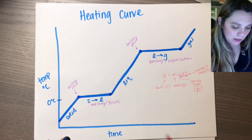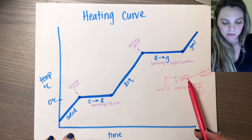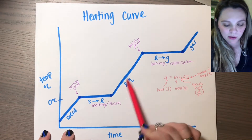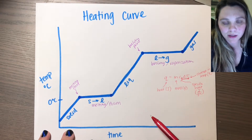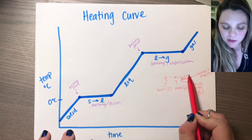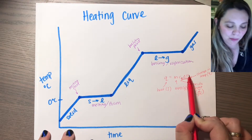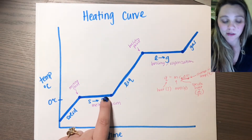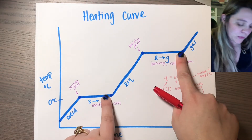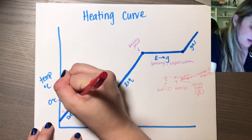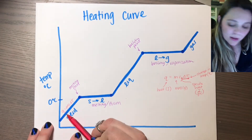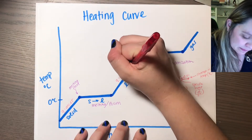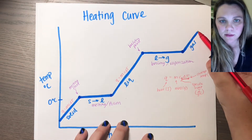The number one mistake made during heating curve questions is that students will just use the wrong equation. They'll try and use Q equals MCAT for every step of a heating curve, and you can't do that. You can only use Q equals MCAT when there is an actual change in temperature. There are two parts of a heating curve where there's no change in temperature — where it flatlines. You cannot use Q equals MCAT there. You only use Q equals MCAT when it's the solid itself heating up, when it's the liquid itself heating up, and when it's the gas heating up.